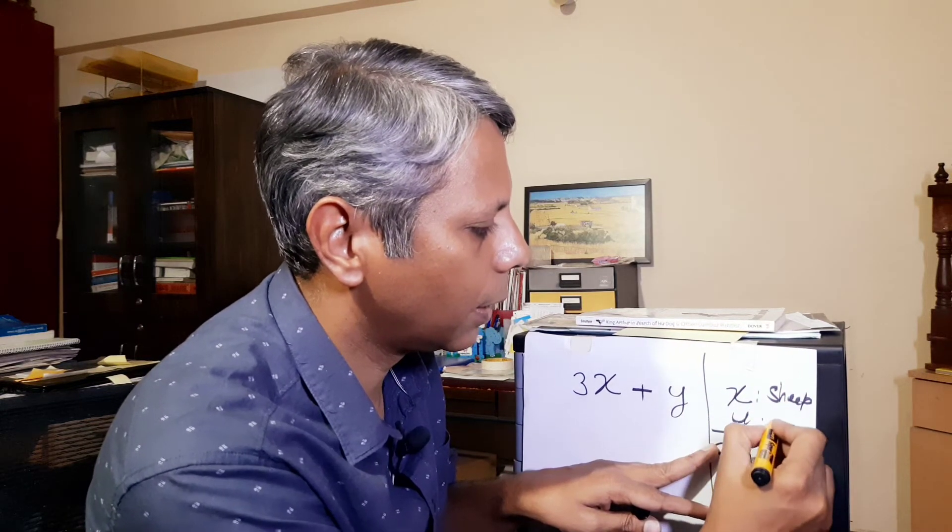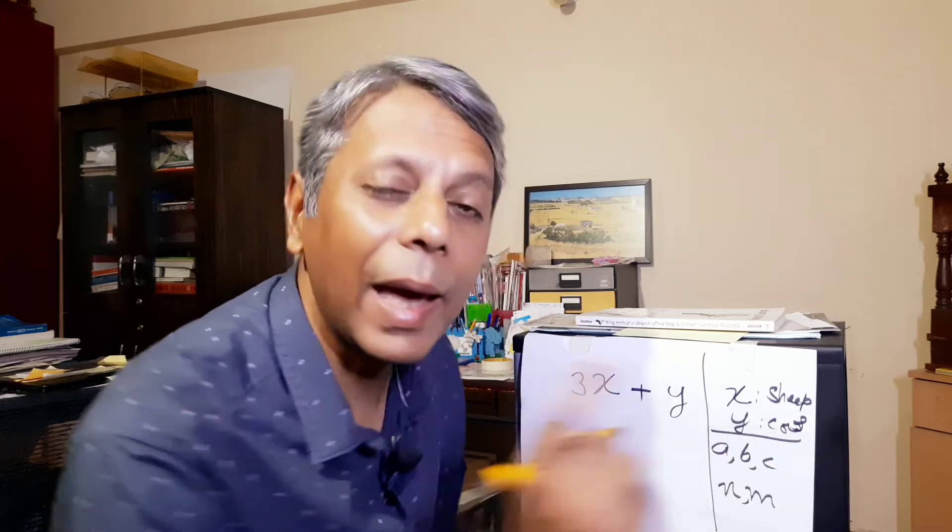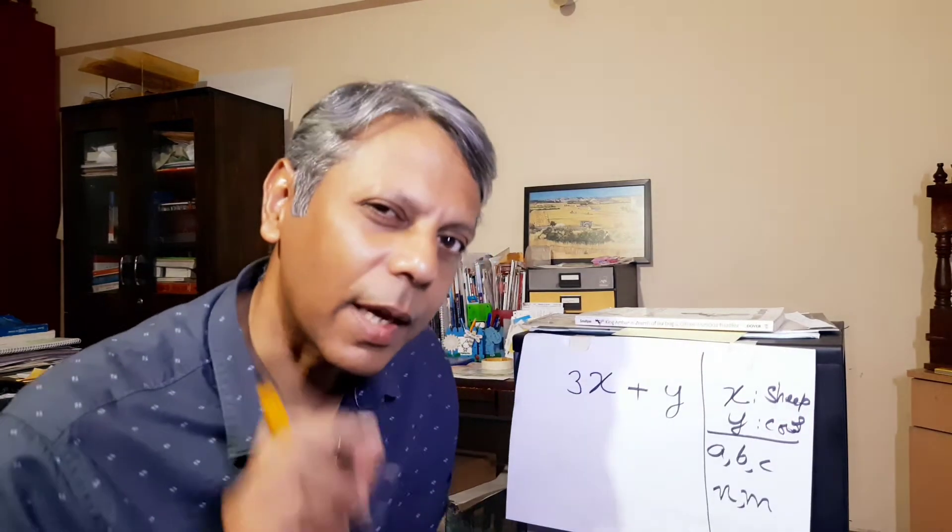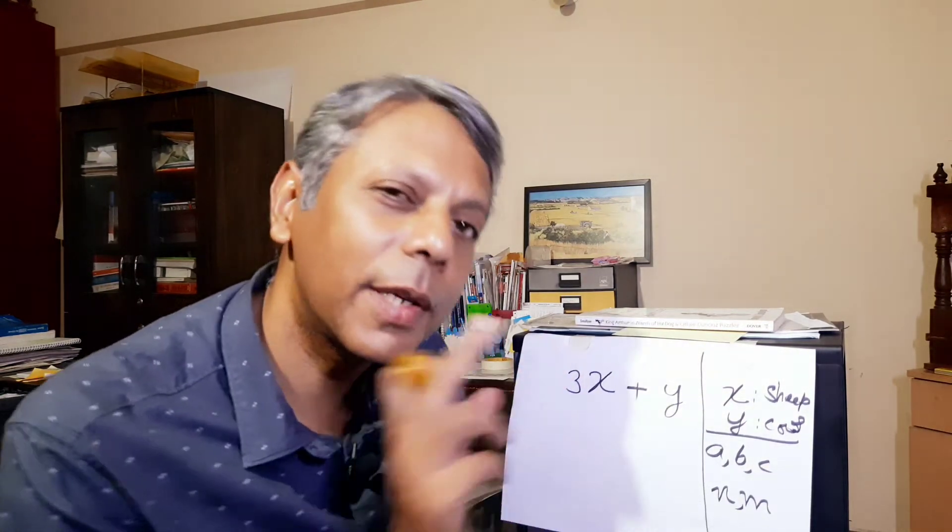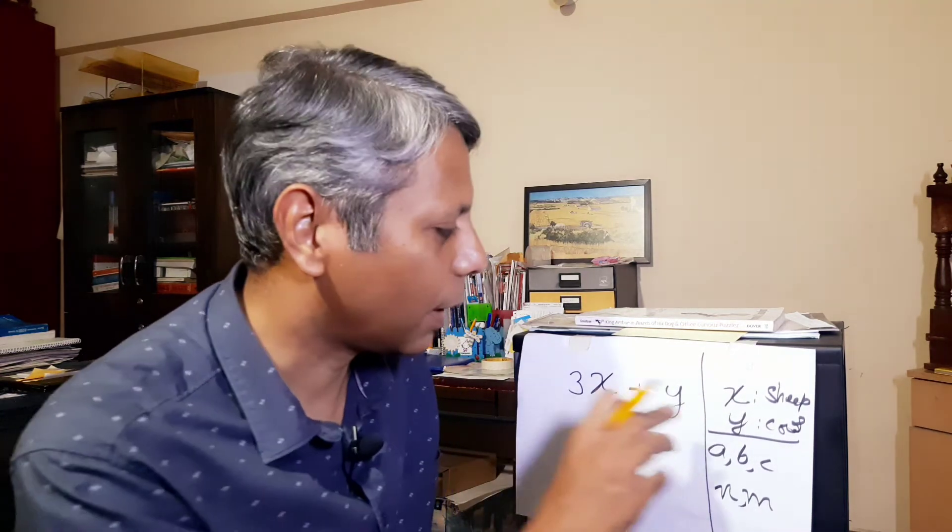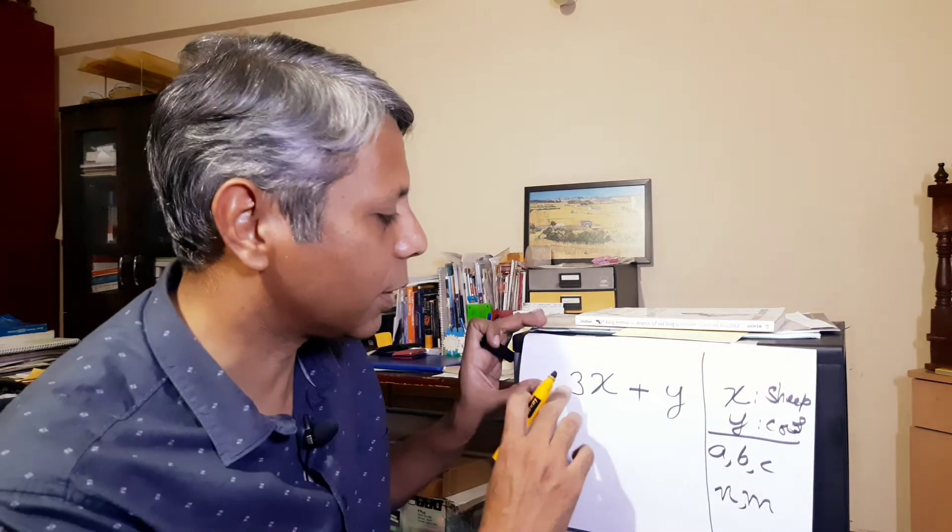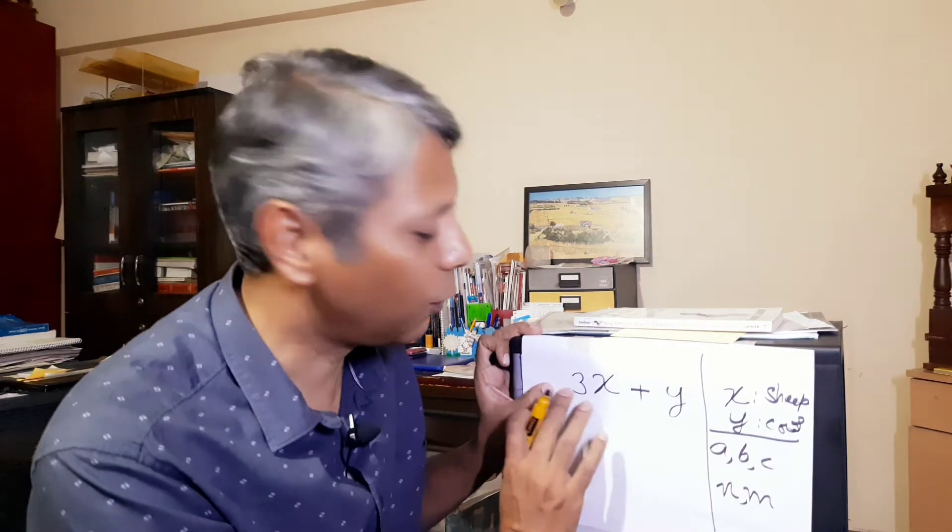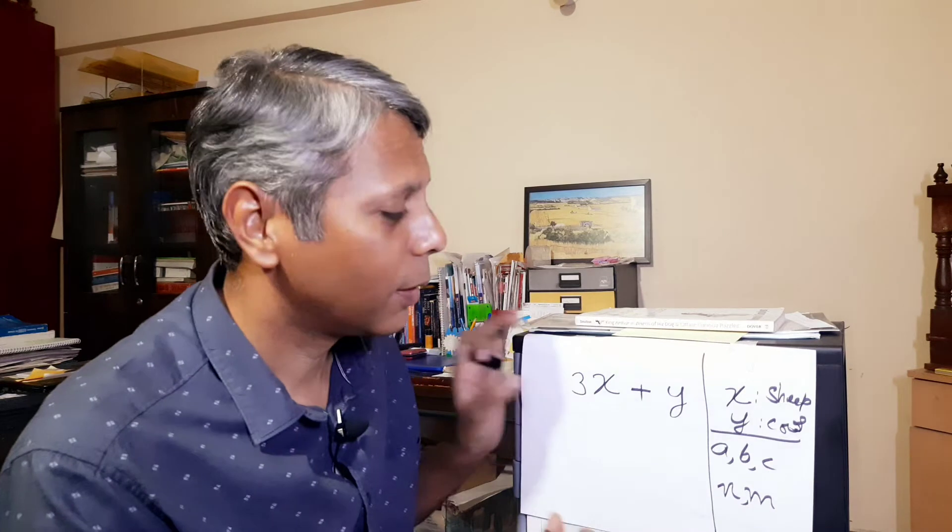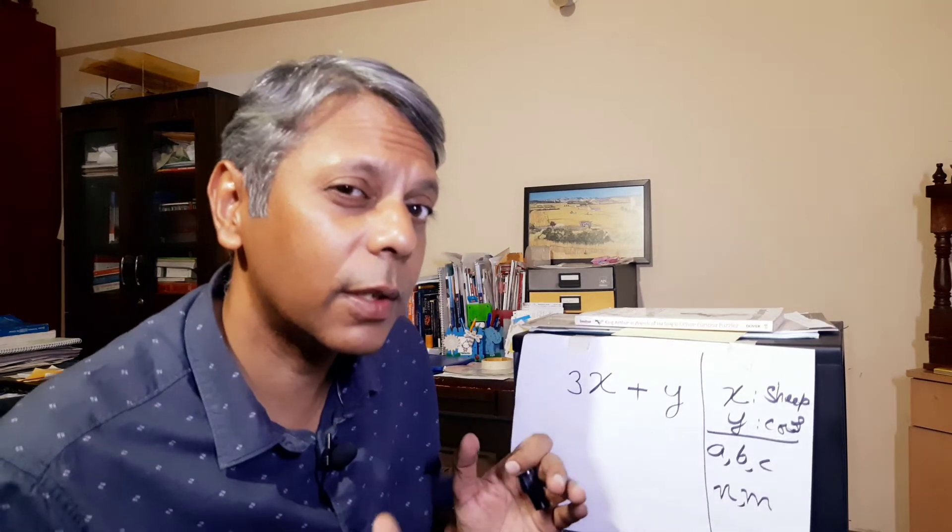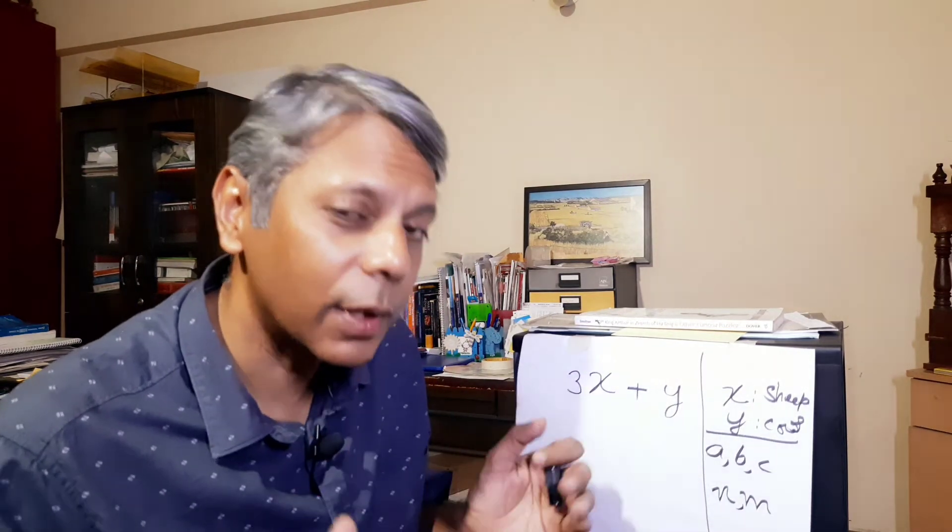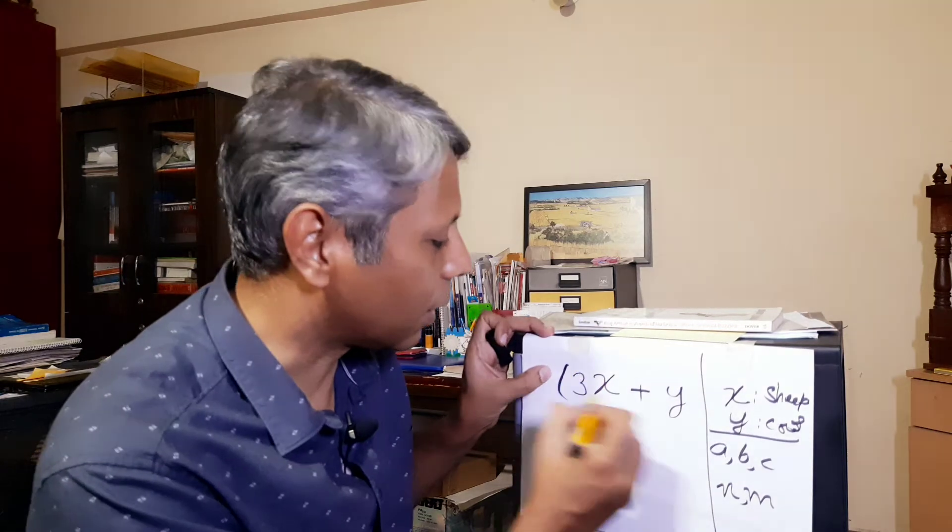Sheep and cows. Actually, to be exact, they didn't represent the sheep, they represented the number of sheep and y represented the number of cows. So the total number of animals is 3x plus y and when you have something like that, because you are interested in total number of animals, you can put brackets around like that.